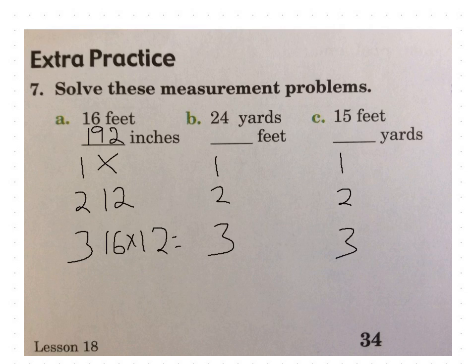24 yards equals how many feet? We're going from yards to feet, so we're going larger to smaller. We multiply. How many feet are in a yard? It's going to be 3. And now you'll do your 24 times 3. 24 times 3 is 72. So you can write your answer there.